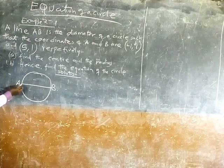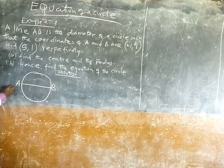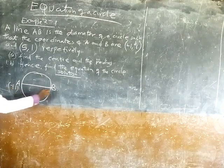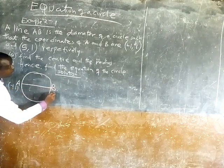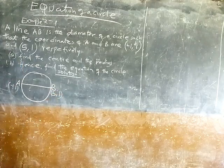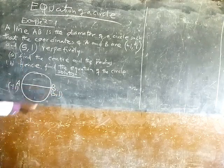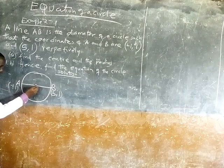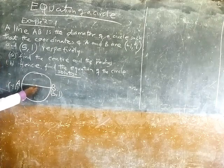So the coordinate of A is negative 1, 1. B is 5, 1. So what will be the center of AB? And how do you get the center, the midpoint?